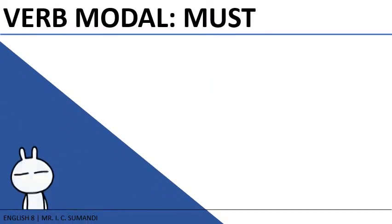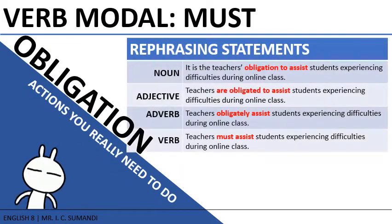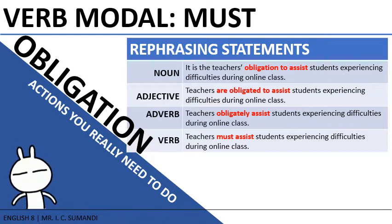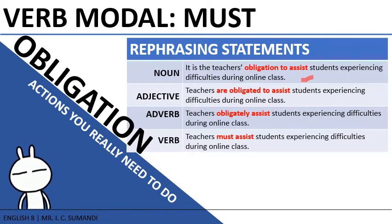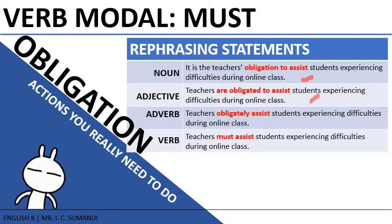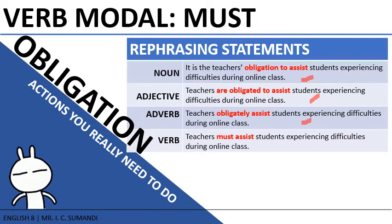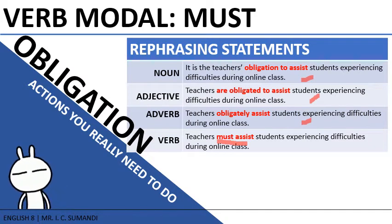The verb modal must refers to your obligation — actions you need to do. If you don't use the verb modal must, your sentences may look like these with noun, adverb, and adjective forms. For example: 'It is the teacher's obligation to assist students experiencing difficulties during online class.' To make sentences short and concise, we use must: 'Teachers must assist students experiencing difficulties during online class.'